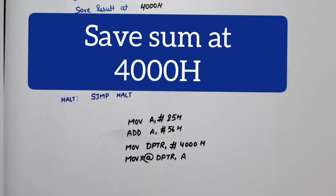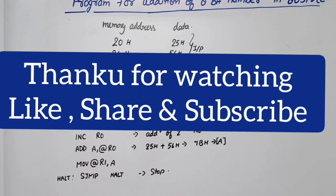In this case, we save the accumulator data at 4000H, which is external memory. Now we halt the program as usual, just as we did previously: HALT: SJMP HALT. This is the simplest addition program. Thank you so much. In the next video, I will discuss the addition program with carry.